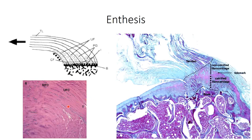The second zone is known as the non-mineralized fibrocartilage zone, representing a region of gradual transition from dense regular connective tissue to cartilage. There is also a transition in cell type, as the fibroblasts typically seen in tendon and ligament give way to cartilage-producing chondrocytes. This region has a greater degree of flexibility and adjusts to changes in joint angles during movement. The third region is referred to as mineralized fibrocartilage, in which the fibrocartilaginous tissue becomes calcified. The transition is somewhat abrupt, resulting in a distinct boundary known as the tide mark, or blue line. The calcified fibrocartilage then transitions into fully ossified bone tissue.